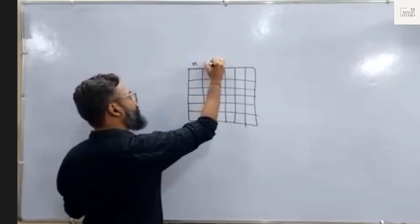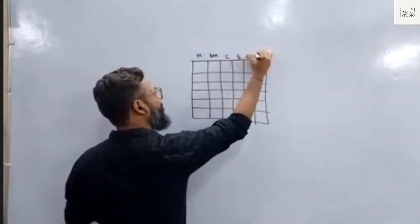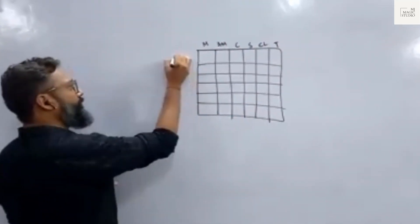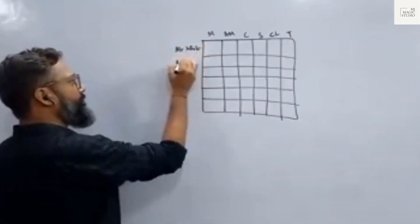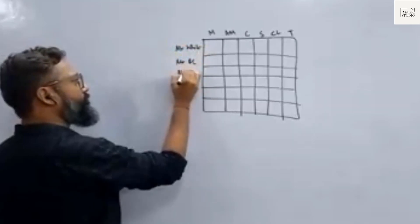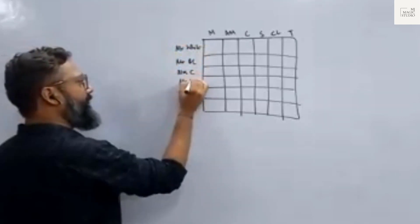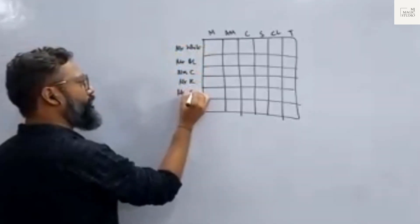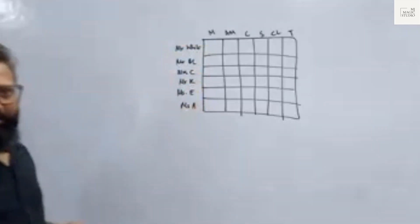You can have this six into six. Manager, assistant manager, cashier, stenographer, clerk and teller. We have got Mr. White, Mr. Black, Mrs. Coffee, Mr. Kelly, Ms. Earnshaw and Ms. Ankita. Clear.